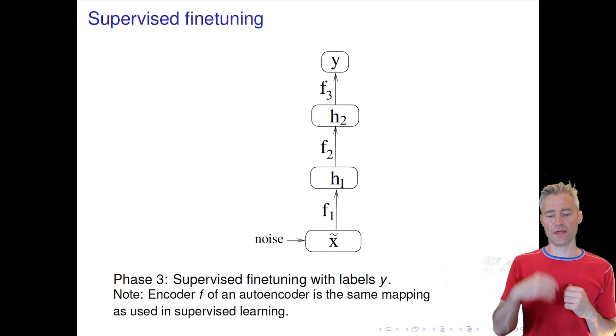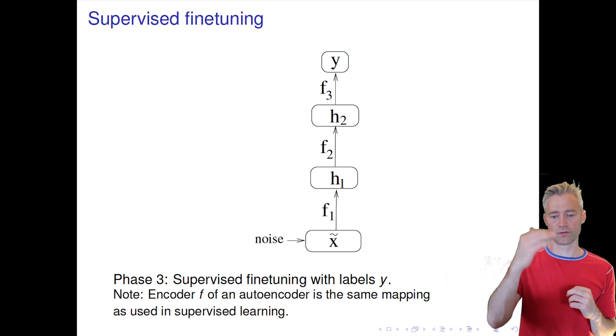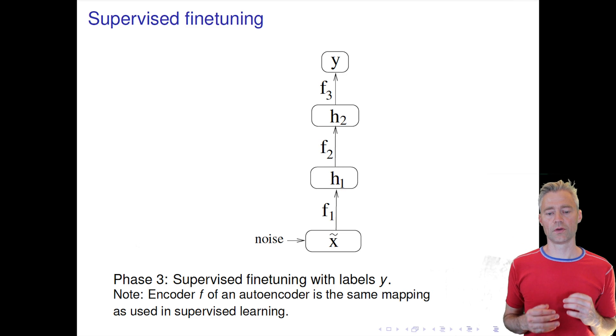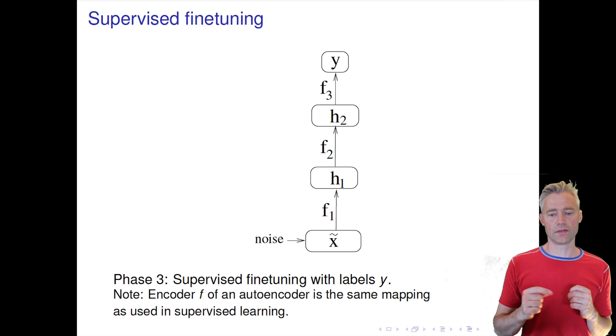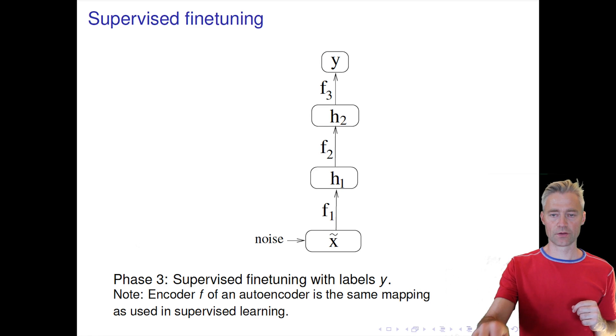And then in the end we can take the second hidden representation, latent representation we get, and then we can fine-tune the whole chain and make use of our labeled data to do this. So this is the idea behind this supervised fine-tuning and unsupervised pre-training.